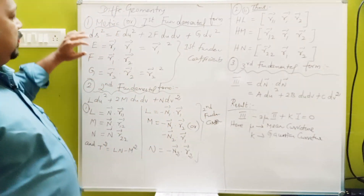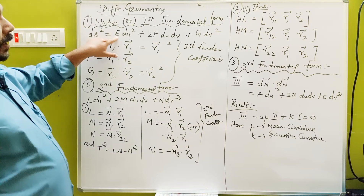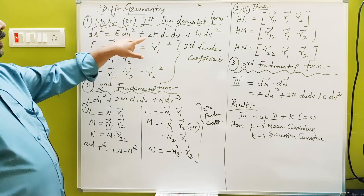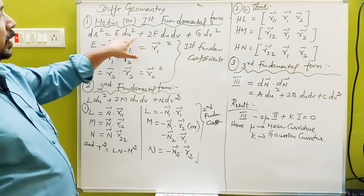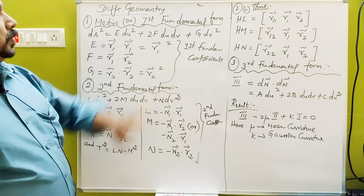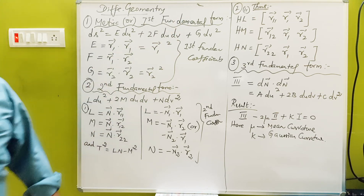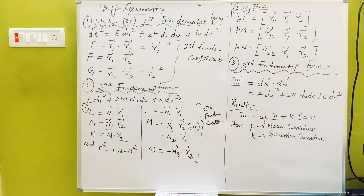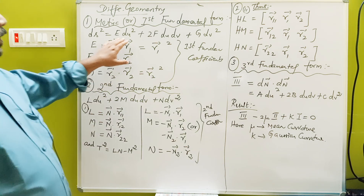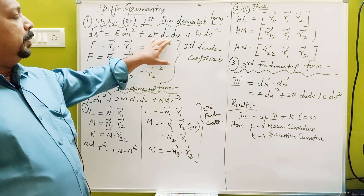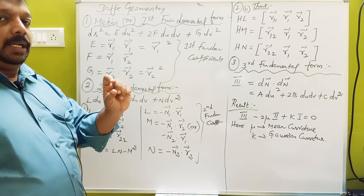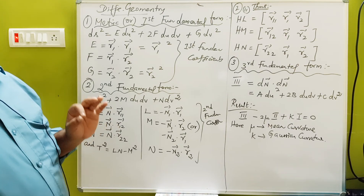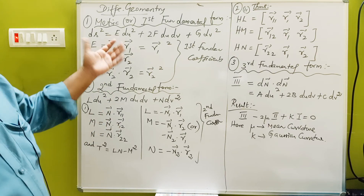So the first fundamental is ds² equals E·du² plus 2F·du·dv plus G·dv². So all right. Now ds² equals E·a² plus F·b². Then induction: a du, b dv. That's all. So we have to use this formula. Di squared.